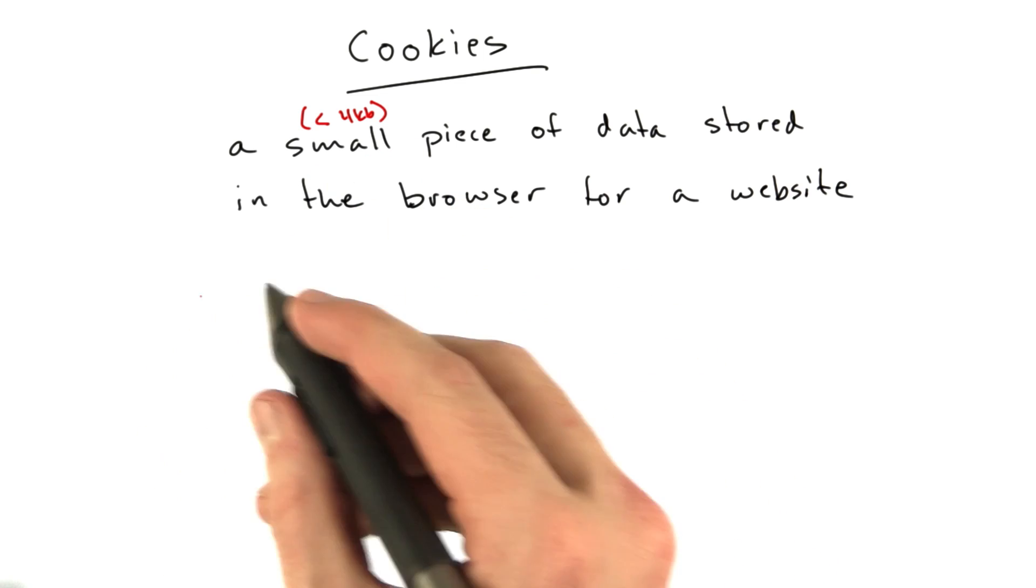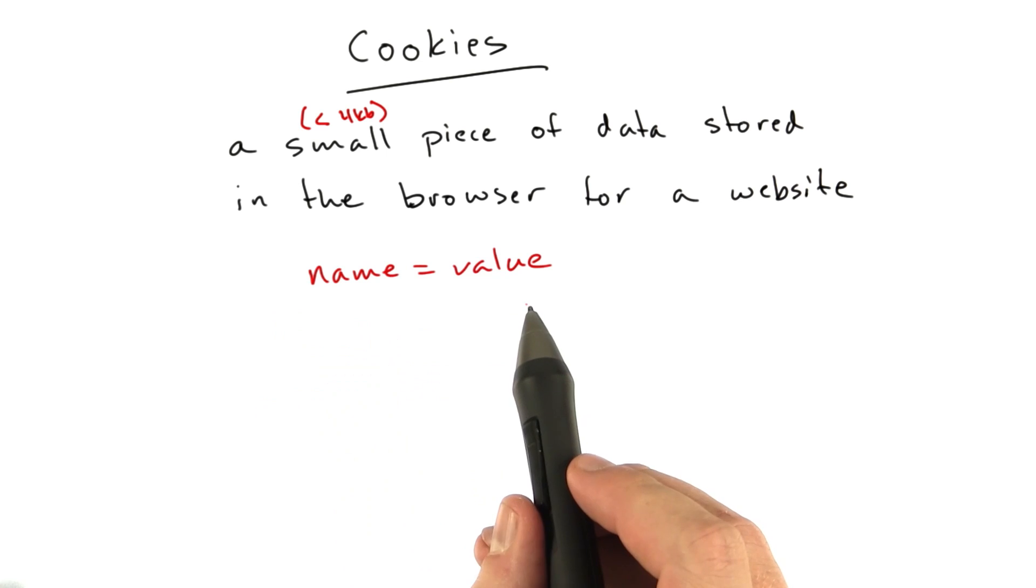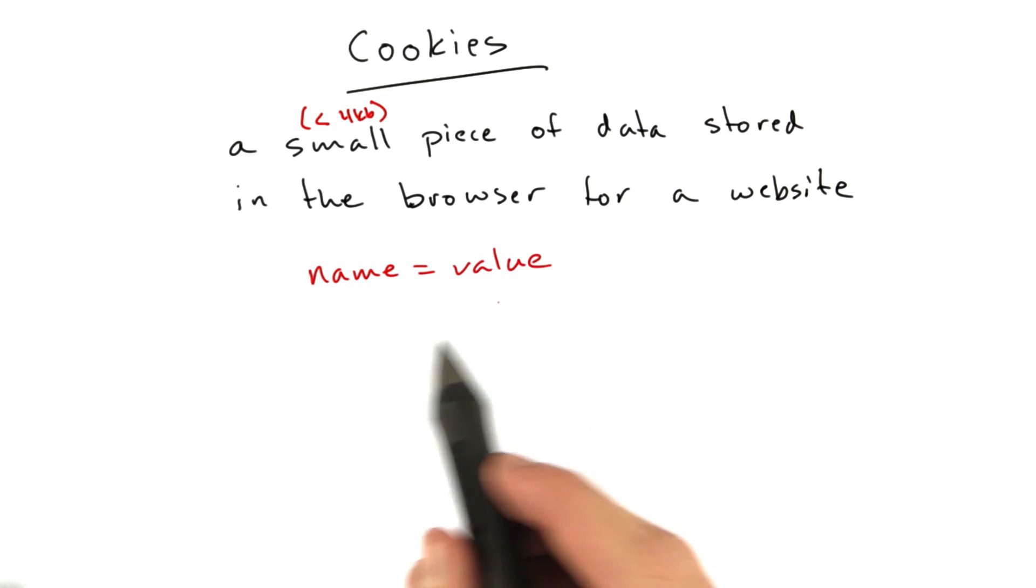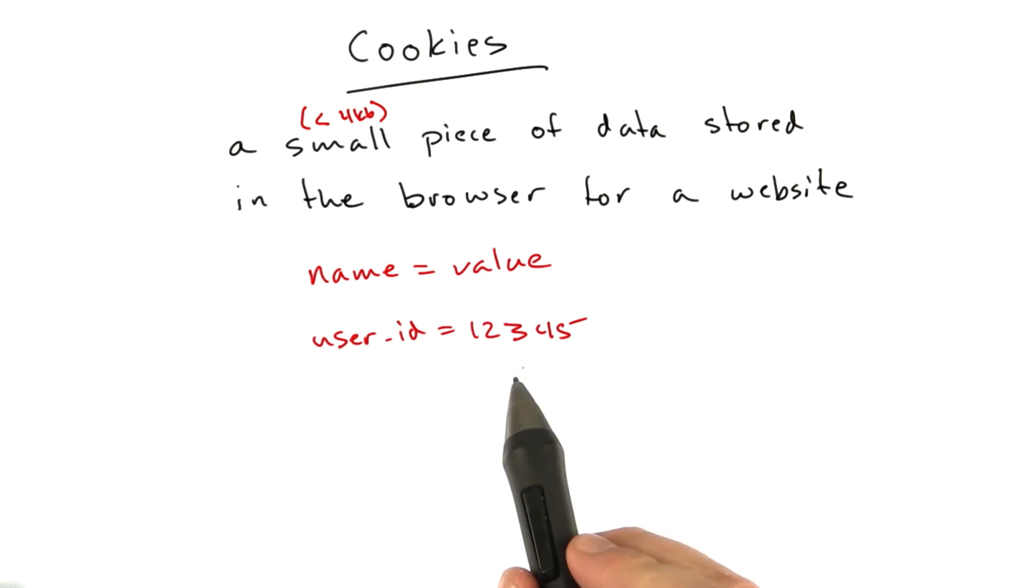It takes the format conceptually of something like this: name equals value. And in practice, it might look something like this: user ID equals 12345.